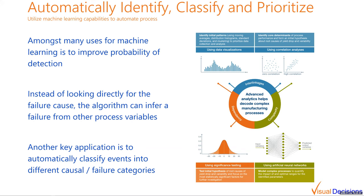I mentioned that we can utilize machine learning and artificial intelligence to automatically classify some of these things. Amongst the many uses for machine learning is to improve the probability of detection. Sometimes we can't directly detect the particular cause that's happening, but if we look indirectly at other process variables or inputs, we can identify that those are correlated to that particular failure cause. By utilizing machine intelligence, we can identify what else we can look at in order to detect when that causal is actually happening. Another key application is to automatically classify events into different causal and failure categories, so that operators don't have to do that manually — or so they can just serve as a check on what the algorithm is reporting.